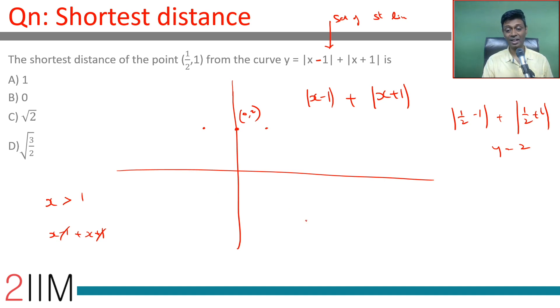When x < -1, this becomes (1 - x) + (-1 - x) = -2x. So this will be a line like this here and a line like this here. Between -1 and 1, it's (1 - x) + (x + 1) = 2.